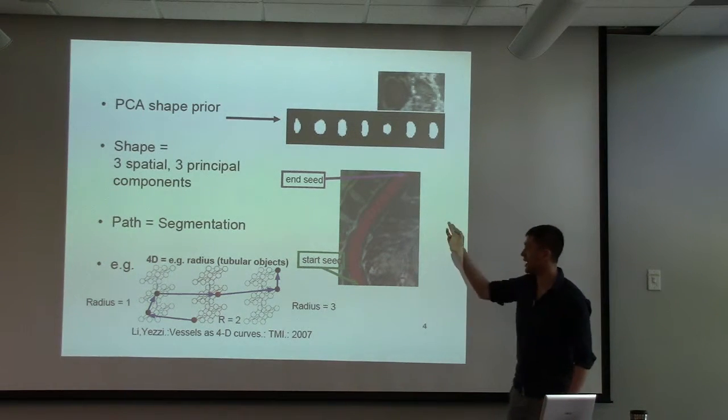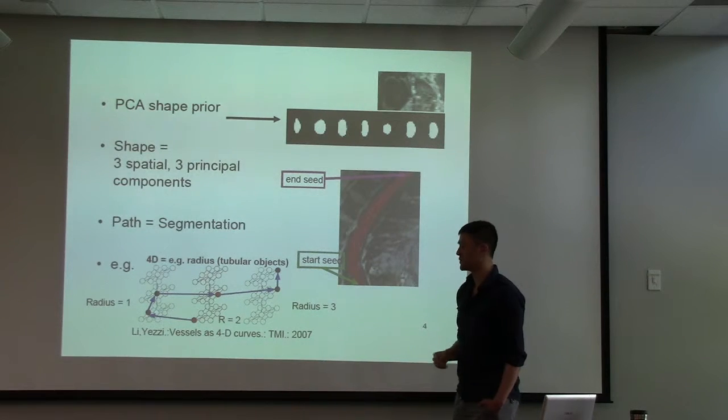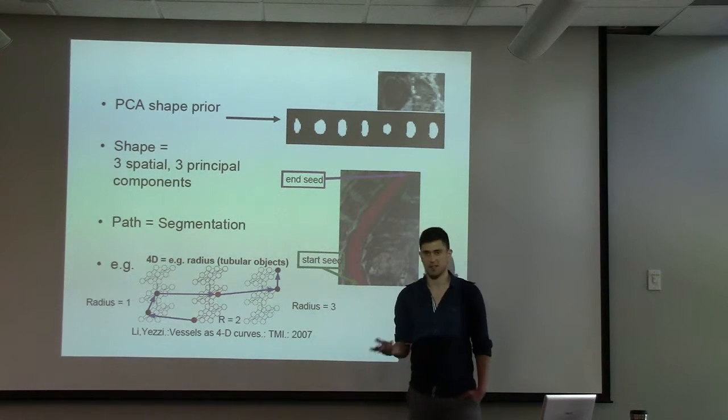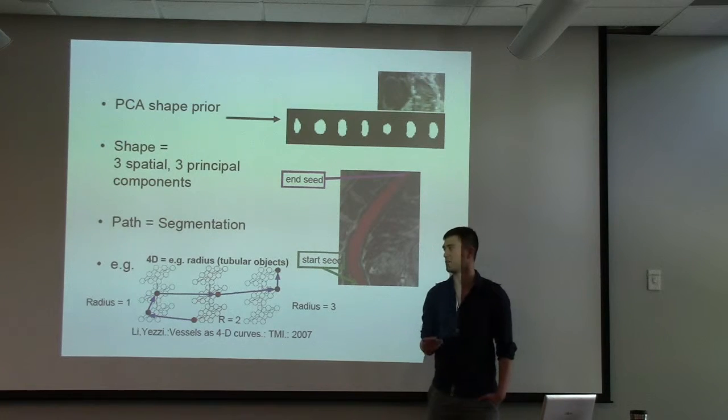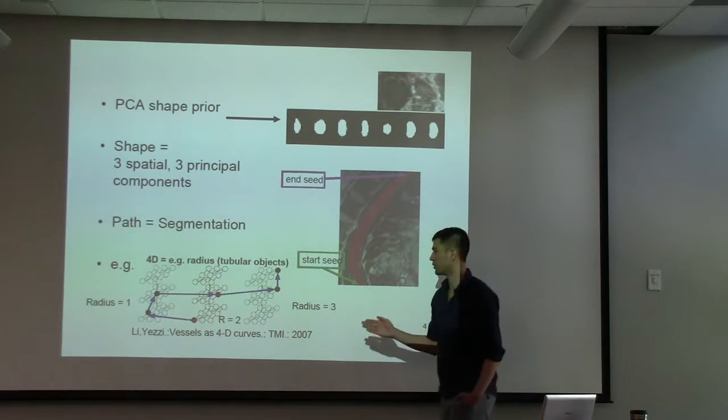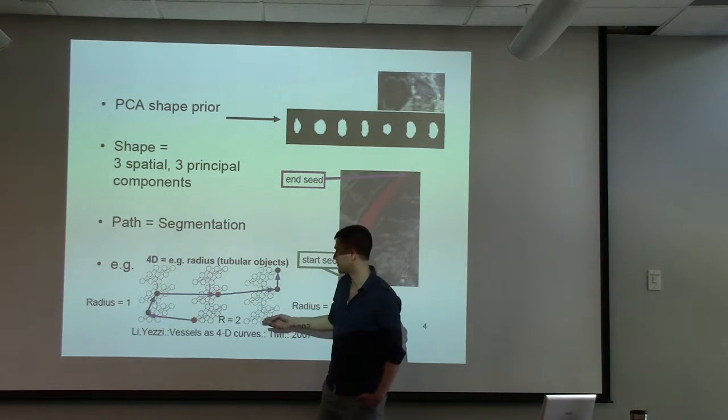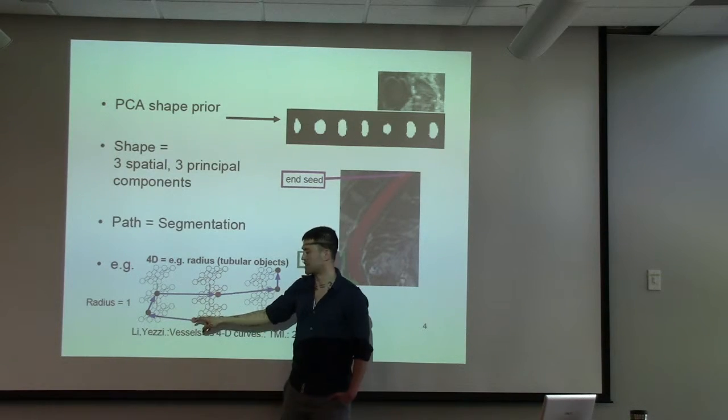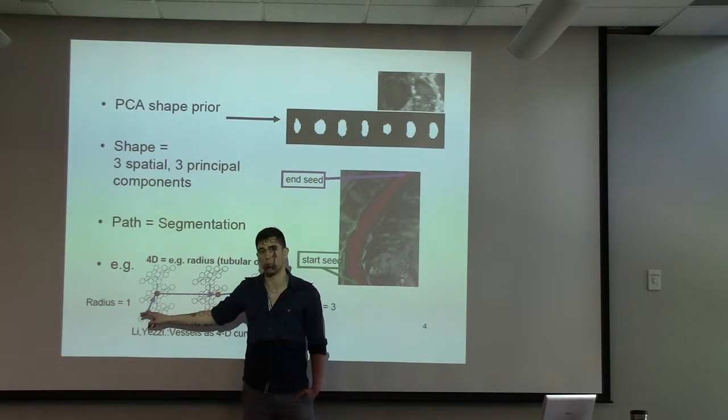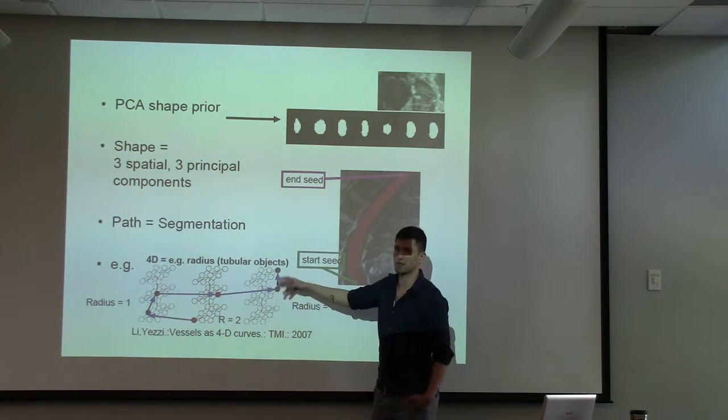So given a start and endpoint, we can find a path in the six-dimensional space and that will represent our segmentation. To give some intuition of what that path of the segmentation really means, we can think of a slightly simpler case where we want to segment a tubular object. We can represent an object with a sphere with a radius. So if we have a set of points here where this would be radius of one, radius two, radius of three. If we start here we can say we're at this particular location with radius of two, change location radius of one, change location again radius of one, change spatial location radius of two, spatial location radius of three and so on.